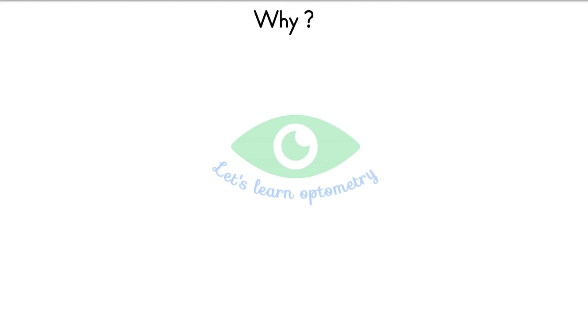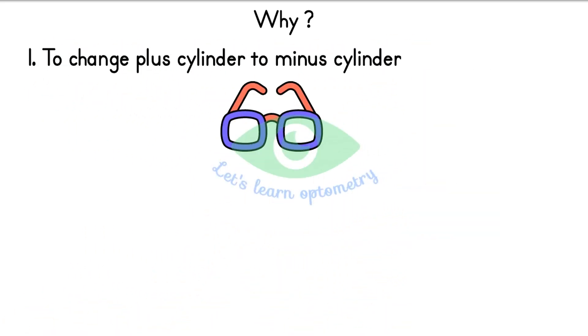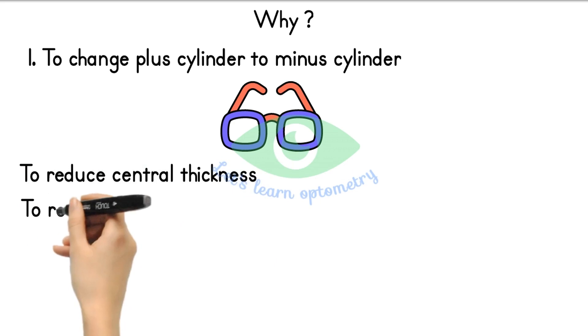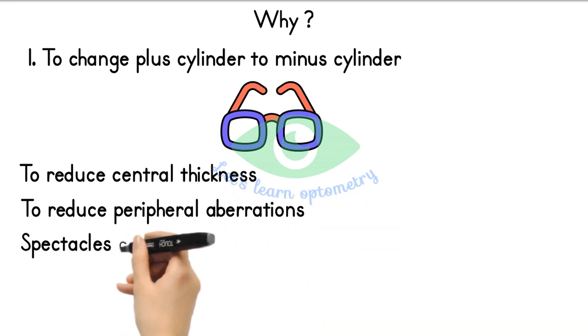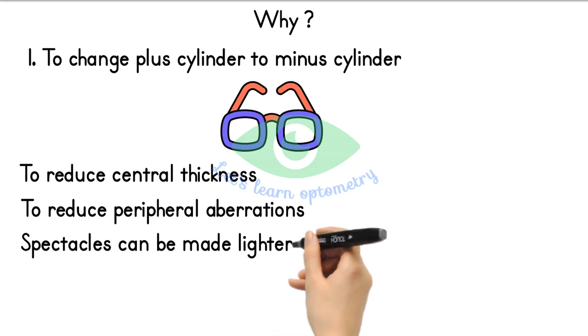First one: during manufacturing of spectacle lenses minus cylinder form is preferred to plus cylinder form. So if we have a prescription in plus cylinder form we can change that to minus cylinder form. But why minus cylinder is preferred? Because with minus cylinder the central thickness of the lens can be reduced. We can reduce the peripheral abrasions also. With minus cylinder the lens can be made lighter. And minus cylinders are easier to adapt to the patient than plus cylinders.